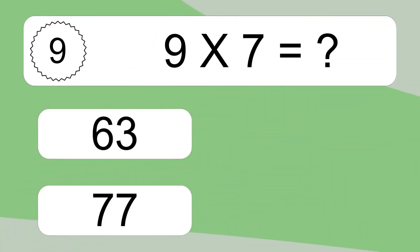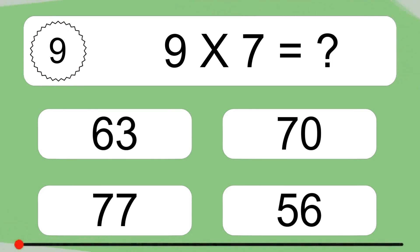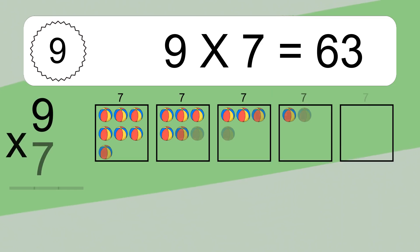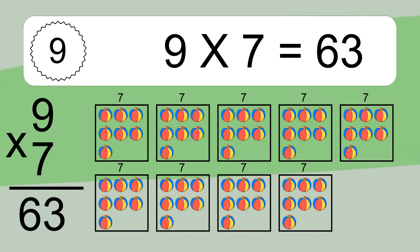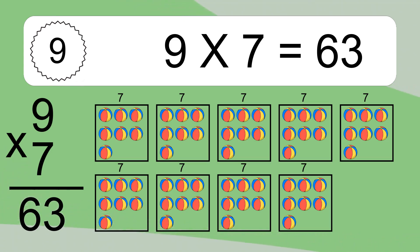9 times 7 equals what? 9 times 7 equals 63. We have nine boxes and each box has seven colorful balls inside. If you count all the balls in all the boxes together, you will have nine times seven balls. This equals 63 balls.